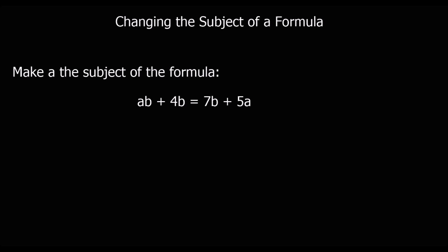Here's a more complicated example. I've got A here and I've got A here. So whenever we've got two A's — or whatever we're trying to make the subject, two B's or two C's — we have to get them on the same side and everything else on the other side. Then we have to factorize. I'm going to get the A's on the left side and everything else onto the right side. So I'm going to take away 5A from both sides of the equation.